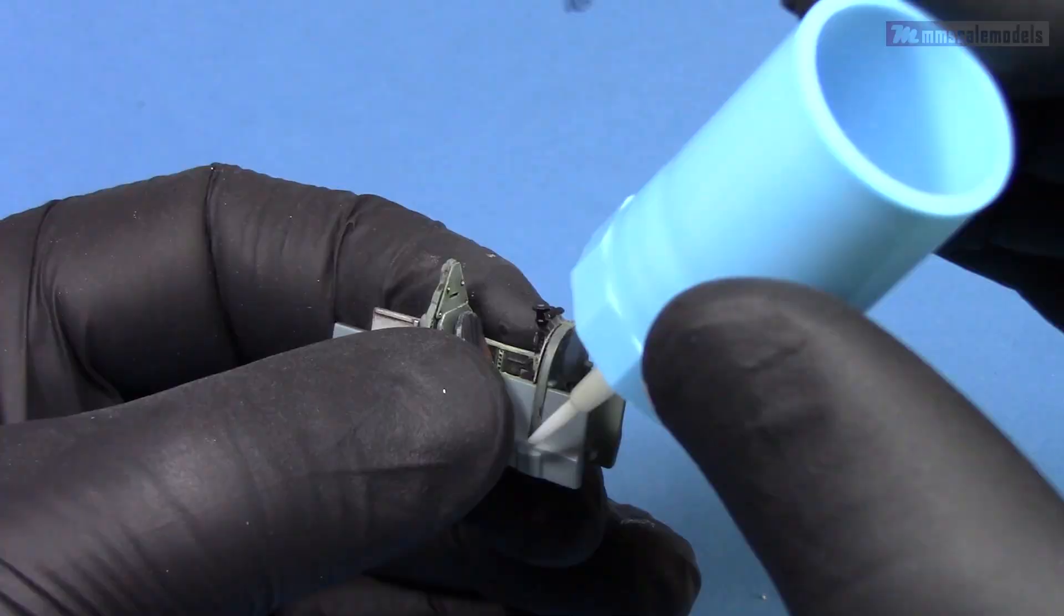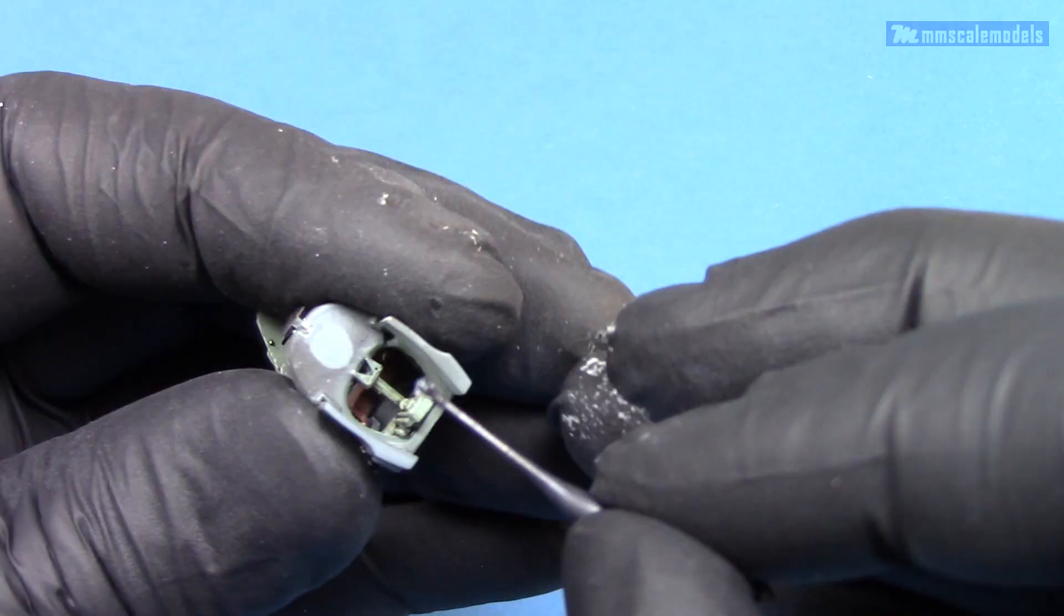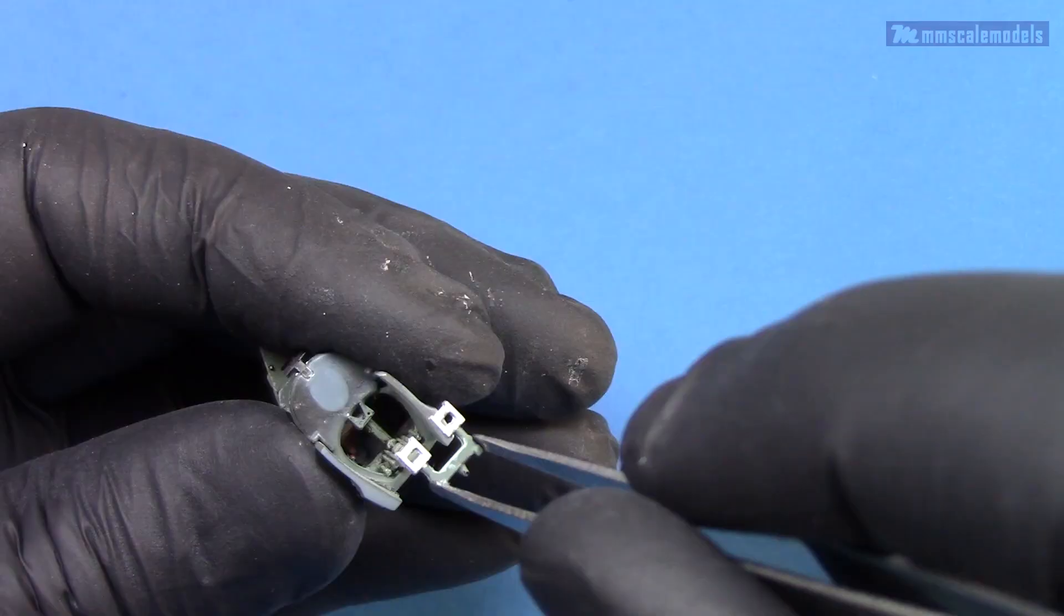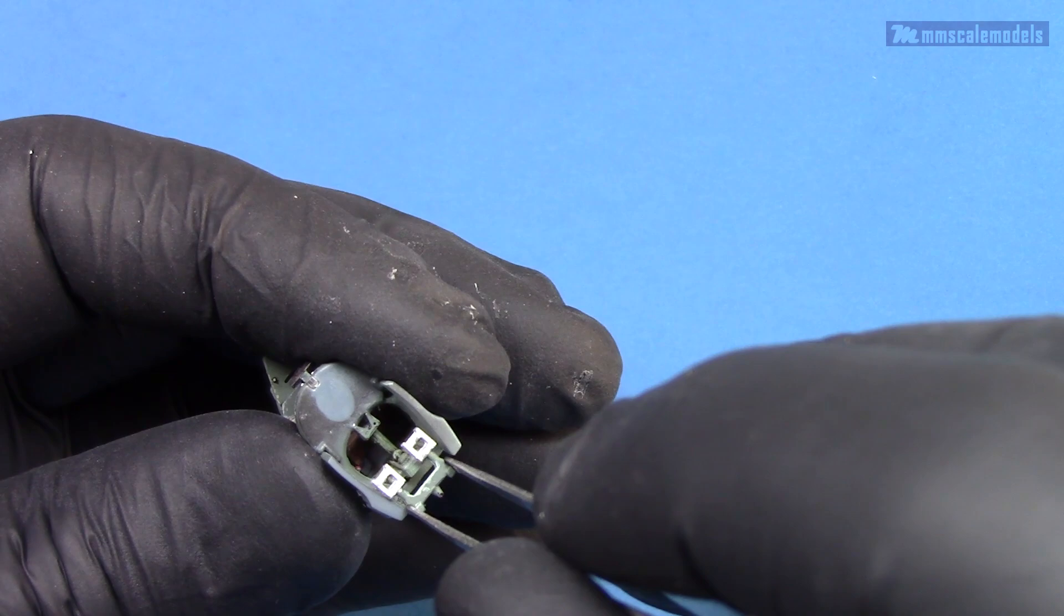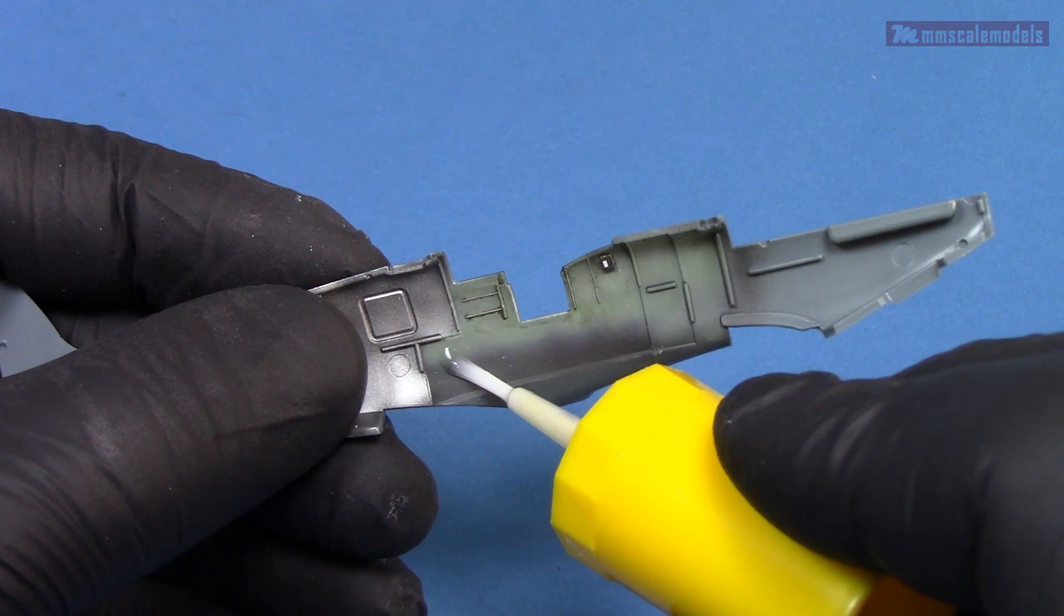Next I added the right side wall. The bulkheads needed some realignment but nothing major. With the pedals attached in position I can move on to gluing the cockpit assembly to the left fuselage half.